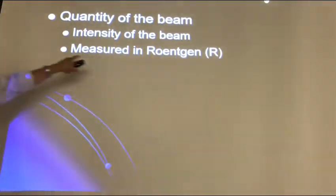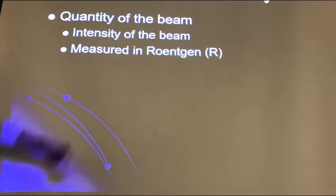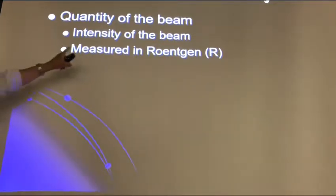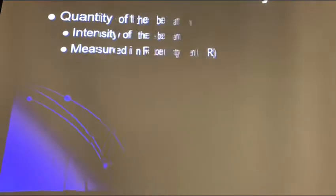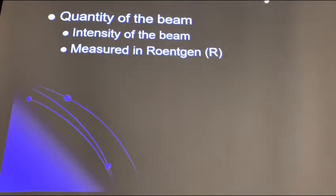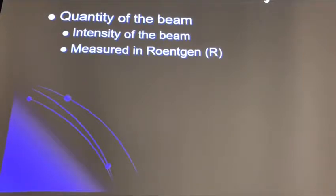Measuring Roentgen — you're measuring exposure. The international units of Roentgen are Coulombs per kilogram. So it's charge in an amount of weight of air — how many ions are you creating in a kilogram of air. That's what this is saying.